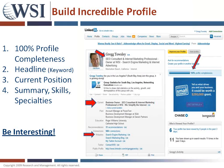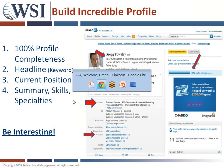If everybody could mute their phones, it will help with cutting down on some of the background noise. The four main areas are: one, getting your profile to 100% completeness; number two is your headline, which is right here; number three is your current position, summary and skills and specialties.